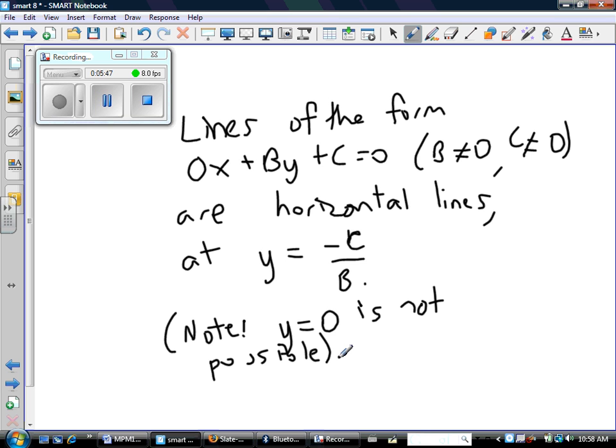So lines of the form 0x + By + C = 0, where B and C are not able to be 0, are horizontal lines, and they exist at the point where y = -C/B. Note, y = 0 is not possible. Sounds good to me.